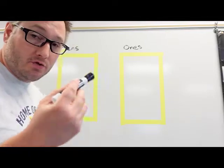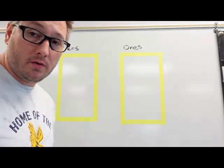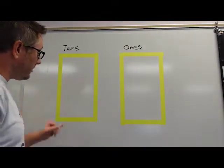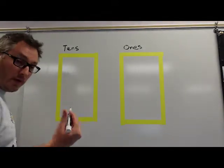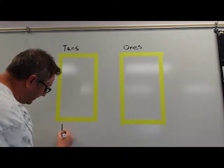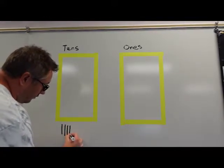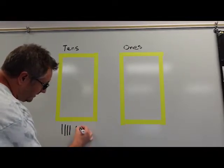Go ahead and draw the number 62. That's six tens and two ones. We'll start in our tens column making a quick ten which is basically a line. 10, 20, 30, 40, 50, 60.